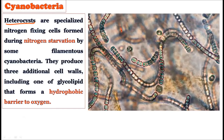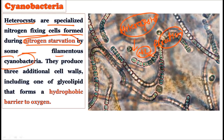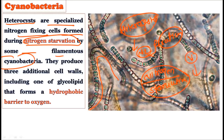The next important structure is the heterocyst — actually more famous than akinetes in cyanobacteria because nitrogen fixation, that is N2 fixation, occurs here. Heterocysts are specialized nitrogen-fixing cells formed during nitrogen starvation by some filamentous cyanobacteria. They are not always present in the filament — they are created in response to nitrogen starvation in the environment, formed from vegetative cells.